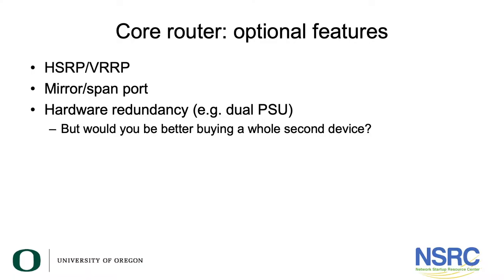We also have some optional features — quite desirable but not show-stoppers if you don't get them. Try to include these in your campus core router specification. First off, having HSRP or VRRP would be quite useful. HSRP stands for Hot Standby Routing Protocol; VRRP is the standard version, Virtual Router Redundancy Protocol. This allows two routers to act as the default gateway on a single LAN, with one in active mode and the other in passive mode. Since an end-user device cannot be configured with two default gateways, HSRP or VRRP allows two routers to share that role — if one fails, the other carries on providing default gateway support.